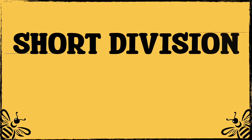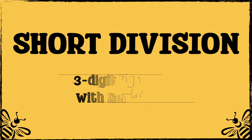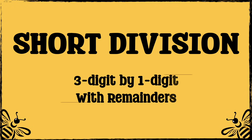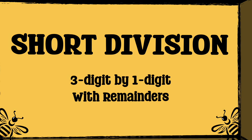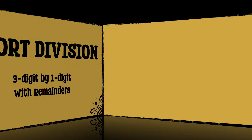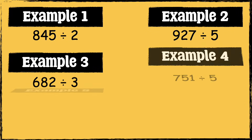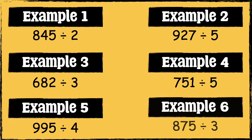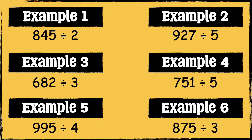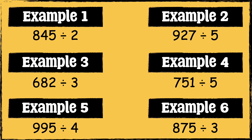In this video we'll be dividing three-digit numbers by one-digit numbers where there is a remainder. I'm going to work through six different examples. Feel free to pause the video at any time if you'd like to try these yourself before we go over the answers.